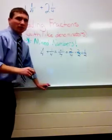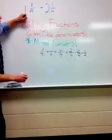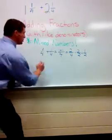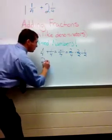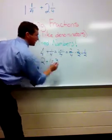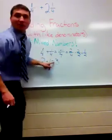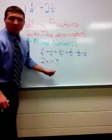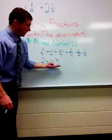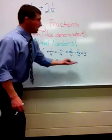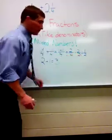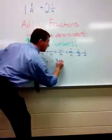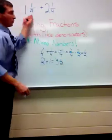Don't forget about those whole numbers though. We still have one whole plus two wholes, so I'm going to add those. Two plus one equals three. Now I can write my mixed number as my answer. Remember, a mixed number is just an expression of a whole number plus its fraction part, so I have three and one-half.